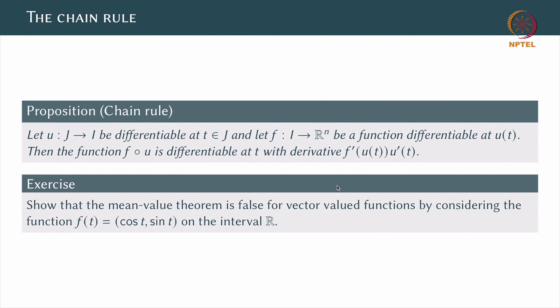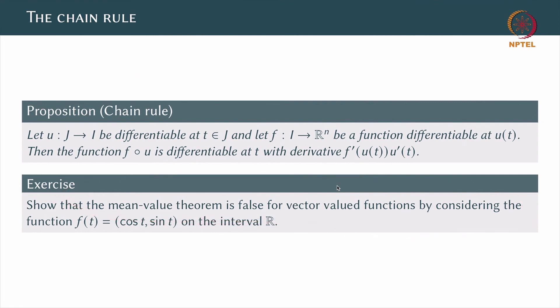So far I have said that everything goes through in an easy way as extensions of familiar facts from calculus. But one fact is not true: the mean value theorem in its direct formulation is actually false for vector valued functions, and I want you to work this exercise out. Show that the mean value theorem is false for vector valued functions by considering the function f of t equal to (cos t, sin t) on the interval R. I am not going to say anything more, as that will spoil the surprise. Please work out this exercise — it is very interesting. This concludes this basic video on vector valued functions of a scalar variable.